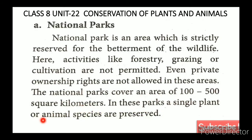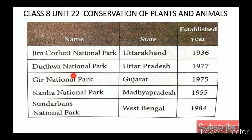In national parks, a single plant or animal species may be preserved. For example, tigers are protected in some parks. Examples include: Jim Corbett National Park, Uttar Pradesh (1936); Dudhwa National Park, Uttar Pradesh (1977); Gir National Park, Gujarat (1975); Gangotri National Park (1955); and Sundarbans National Park, West Bengal (1984).